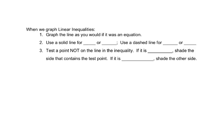So when we graph linear inequalities, we graph the line as we would if it was an equation. We use a solid line if we have greater than or equal to, or less than or equal to, and a dashed line if we have greater or less than. Then we'll test a point that's not on the line. If it's true, then we shade the side that contains that point. If it's false, then we shade the other side.